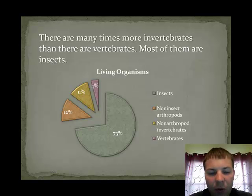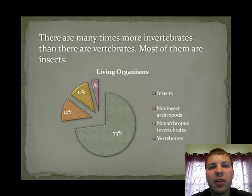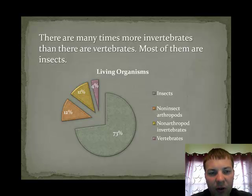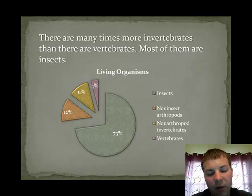And vertebrates — the purple slice there — account for only 4% of the total number of animals in existence. So that 4% includes the mammals, reptiles, amphibians, and humans.